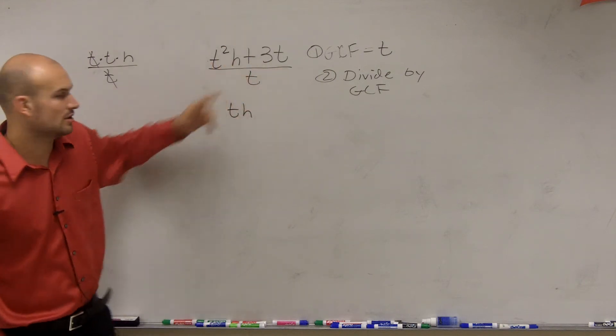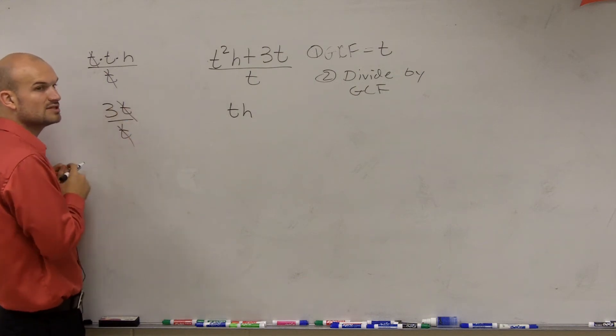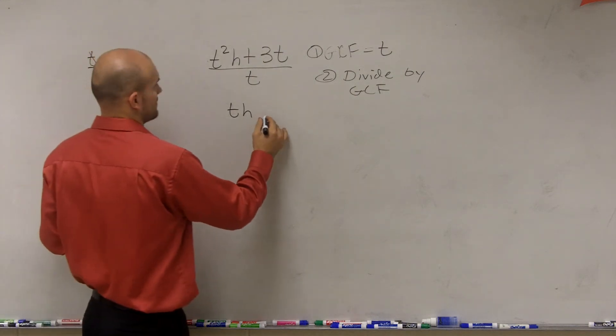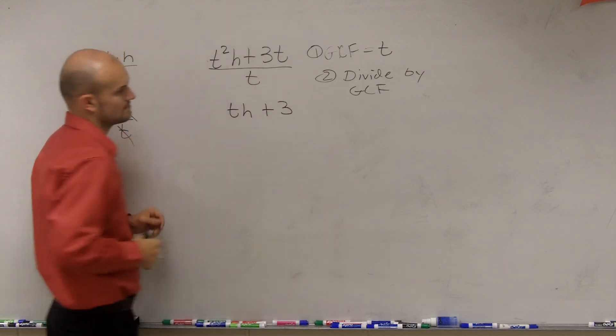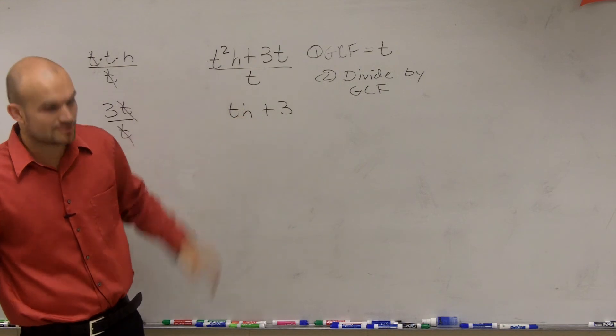Okay? So t squared h divided by t is just going to leave you with th. Then what about 3t? Well, the same thing is going to happen. 3t divided by t. My t's are going to divide into 1. So I'll have plus 3. So when you divide, you find your GCF, you divide by your GCF, and you get th plus 3.